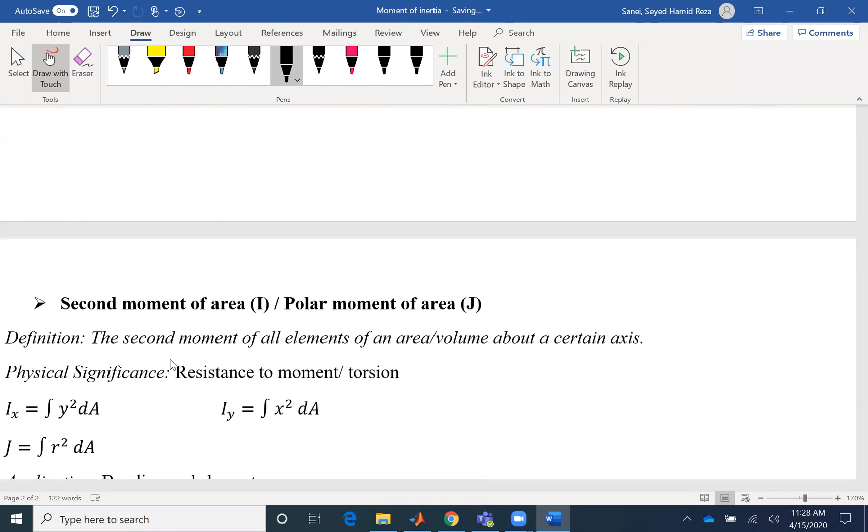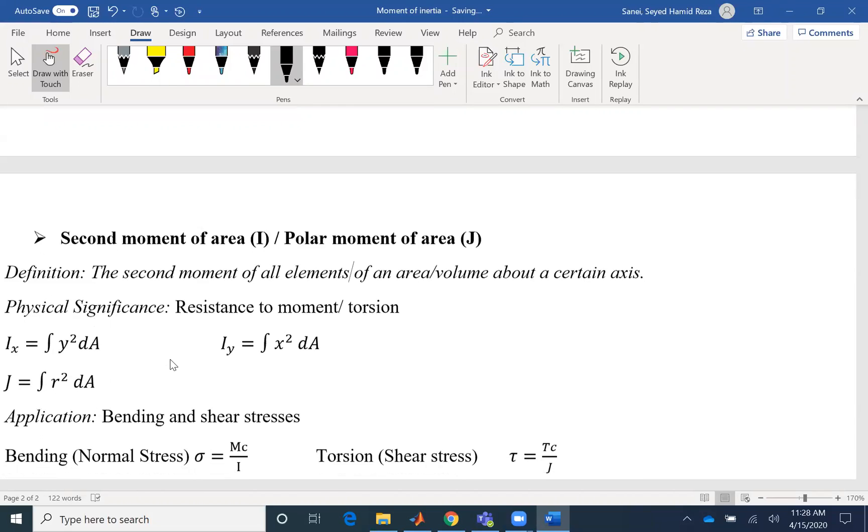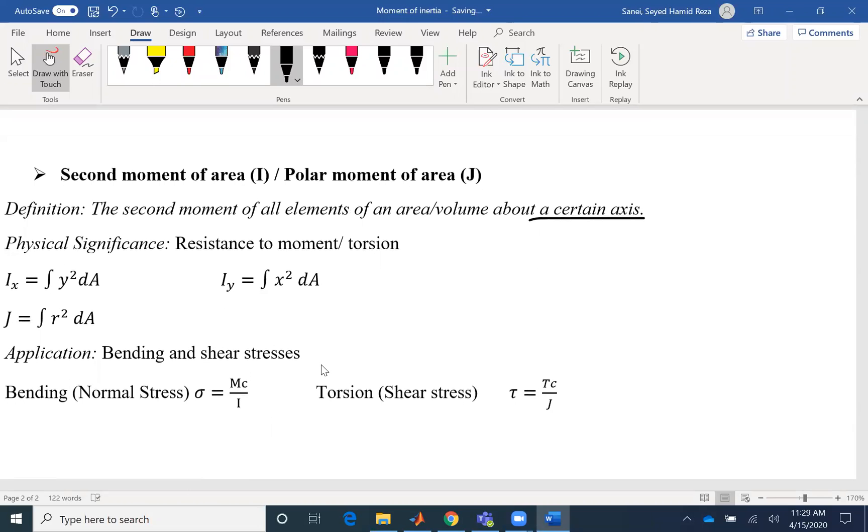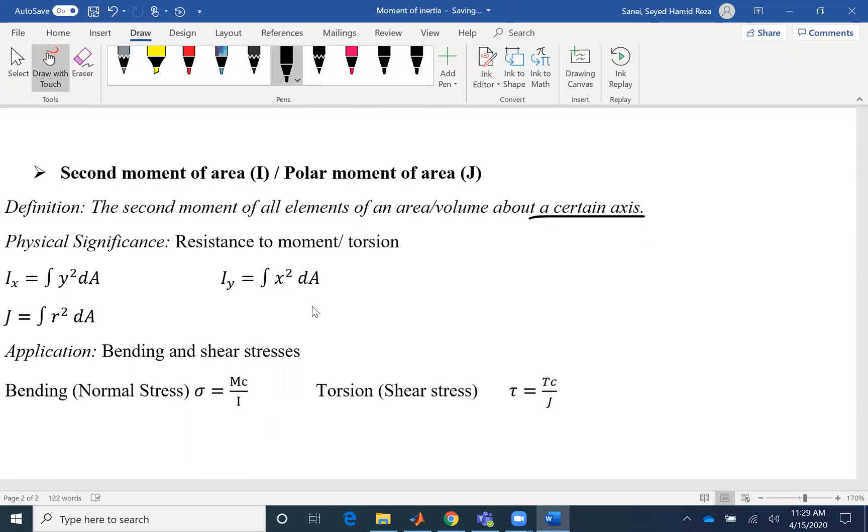And then we have second moment of area, which is the second moment of all elements of an area or volume about a certain axis. So in first moment of area or second moment of area, we are talking about a certain axis. So for different axes, you're going to have different moment of area. And that's defined as resistance to moment, resistance to torsional deformation. And it's Y squared dA for IX or X squared dA for IY. And J is a polar moment of area that we use for circular geometries.